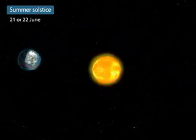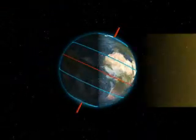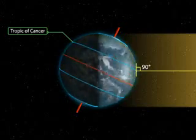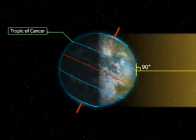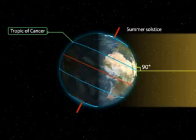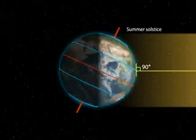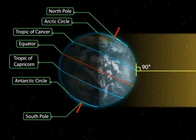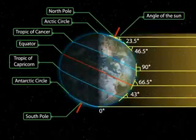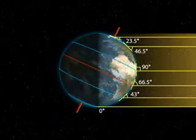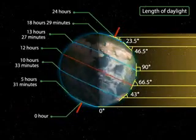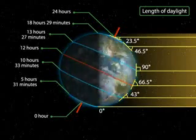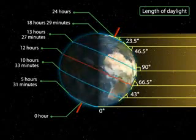Summer solstice: On the 21st or 22nd of June, the overhead Sun is over the Tropic of Cancer, which receives the largest amount of solar radiation. At this time, the northern hemisphere is in the summer solstice, while the southern hemisphere is in the winter solstice. The angle of the Sun decreases towards the poles. On this day, the length of daytime in the northern hemisphere is the longest in the year, while that of the southern hemisphere is the shortest in the year.